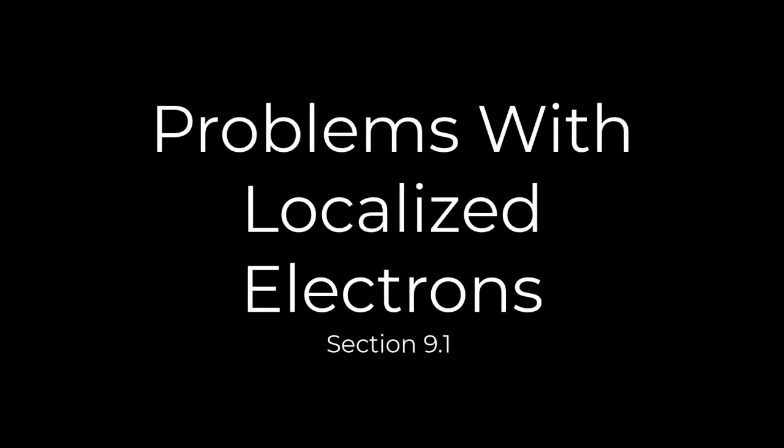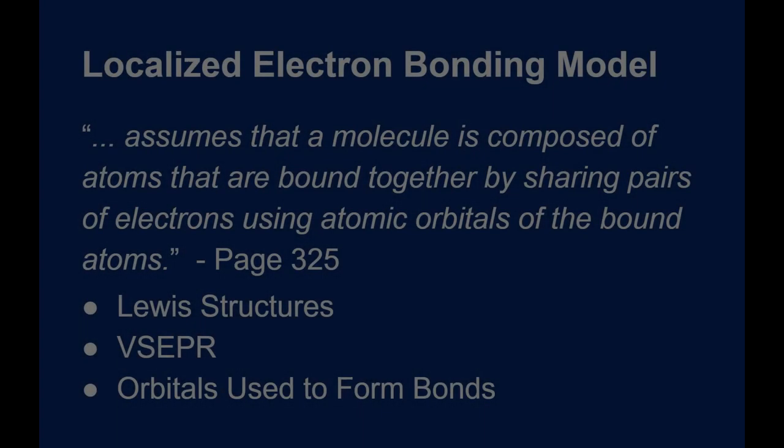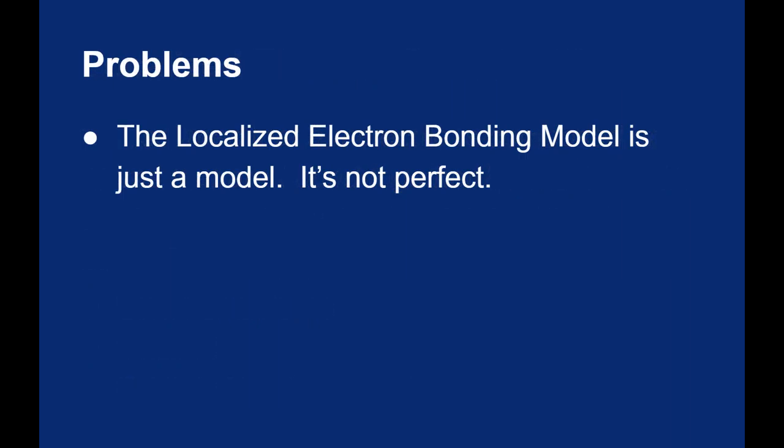We've been relying heavily on the localized electron model. We've been doing Lewis structures, drawing VSEPR shapes, and talking about orbitals overlapping. But there are some issues with the localized electron model — it's not perfect.